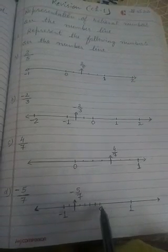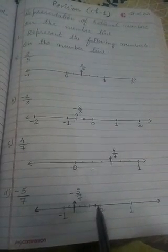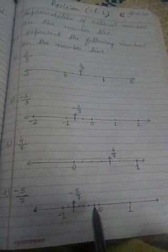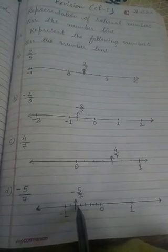Now the last number is minus 5 upon 7. The number is negative, so we will go on the left of 0. The space between 0 and minus 1 will be divided into 7 equal parts: 1, 2, 3, 4, 5, 6, 7. So this will be minus 1 upon 7, this is minus 2 upon 7, minus 3 upon 7, minus 4 upon 7, and this is minus 5 upon 7.